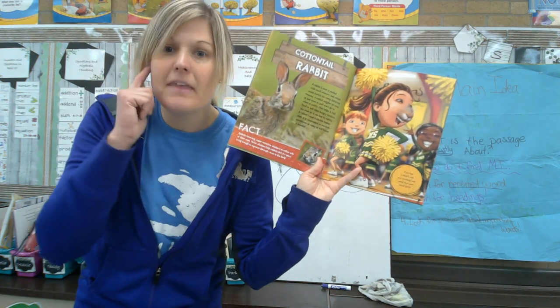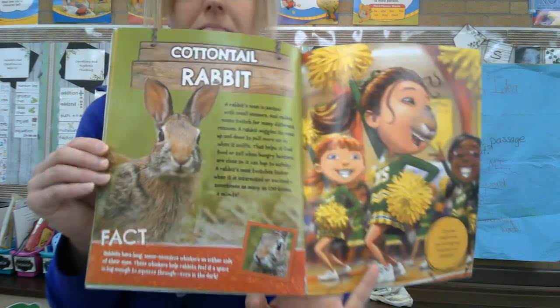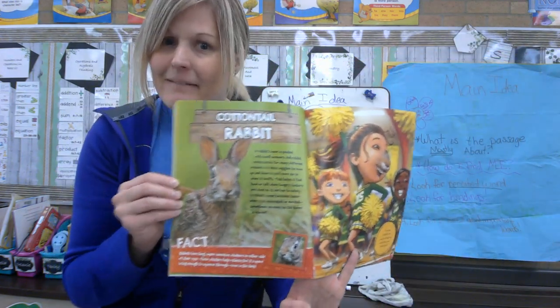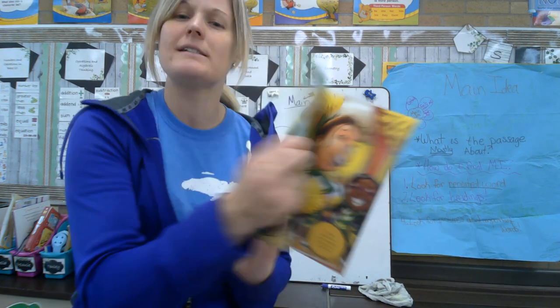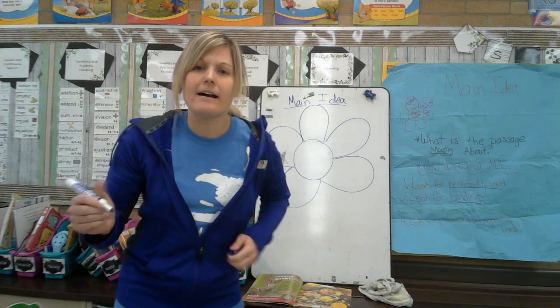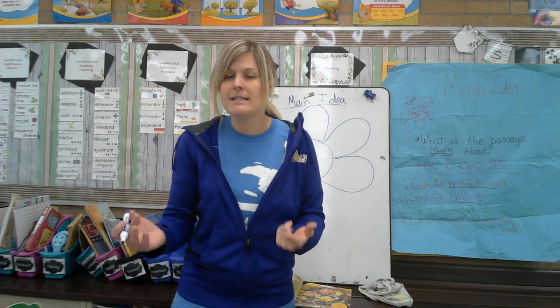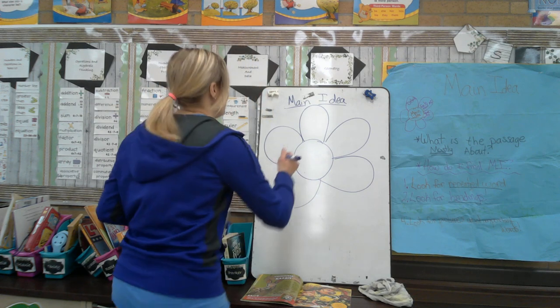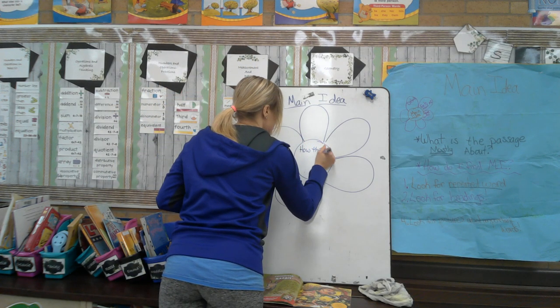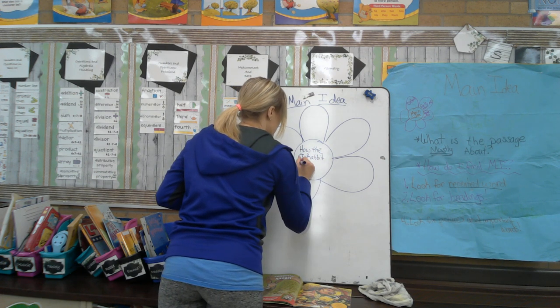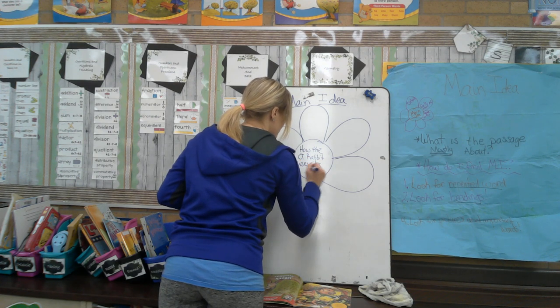Okay, now let's stop and think. What words did you hear repeated over and over again on this page? I bet you heard something about the cottontail rabbit and — what body part are we talking about? Oh yeah, their noses. So I think maybe the main idea of this passage we could say is how the cottontail rabbit uses its nose. We'll write that in the middle of our graphic organizer.